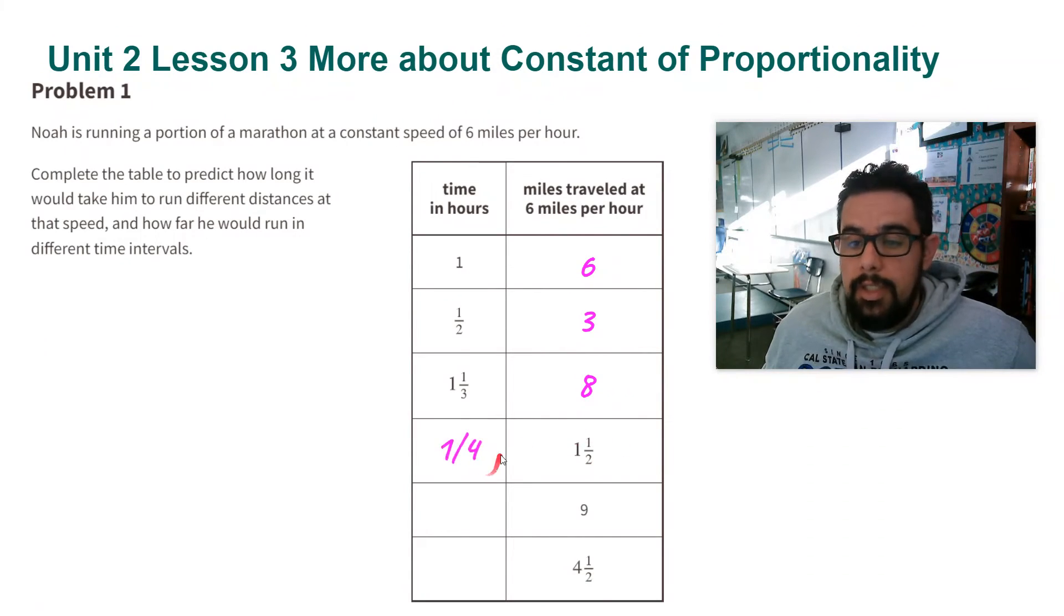For 9, I'm going to do 9 divided by 6, one and a half hours. And then four and a half, four and a half divided by 6 is three quarters of an hour.